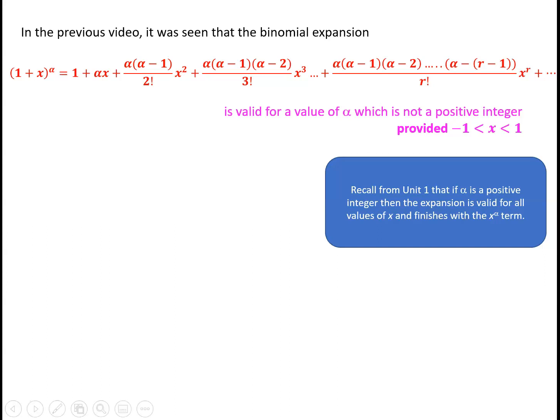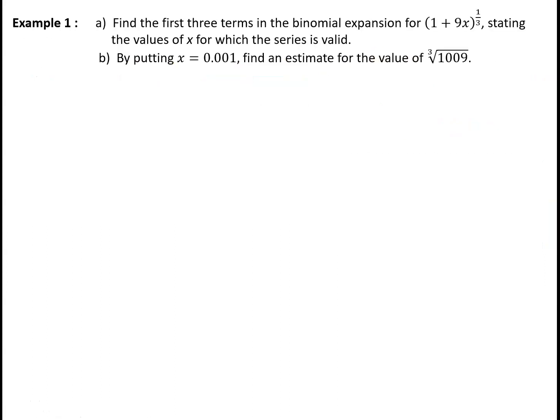So let's look at our first example. We've got to find the first three terms in the expansion for 1 plus 9x to the power one third, we've got to state the values of x for which the series is valid, and then by putting x equal to 0.001, we've got to find an estimate for the cube root of 1009.